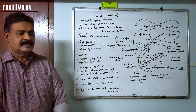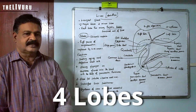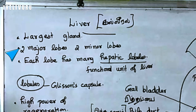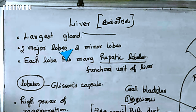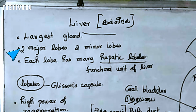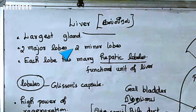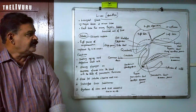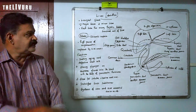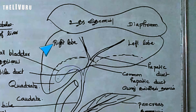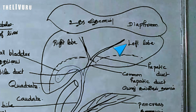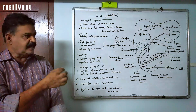The liver has an inner membrane region. The ribs protect most of the liver. The liver is divided into parts: the right liver lobe and the left liver lobe.